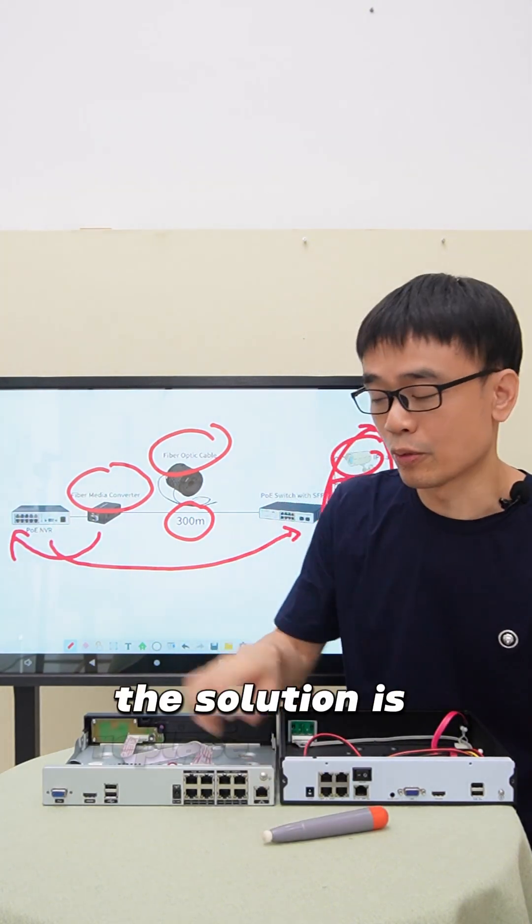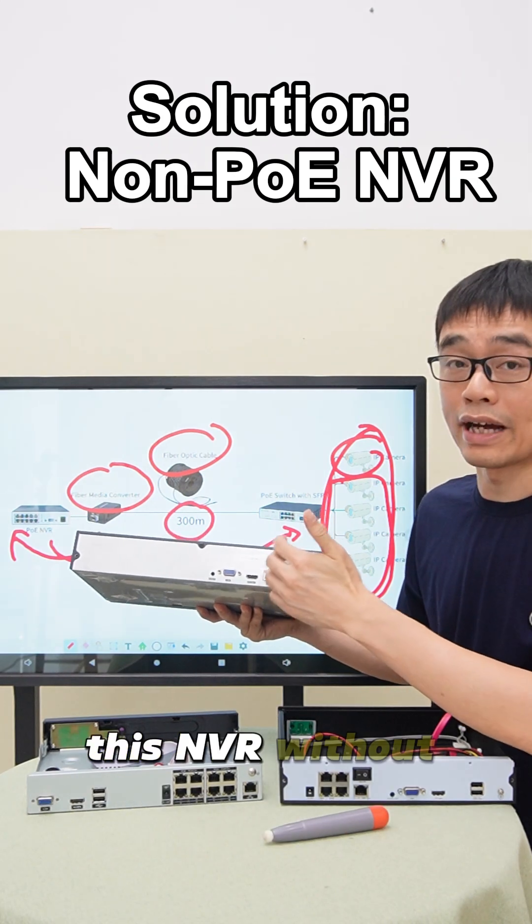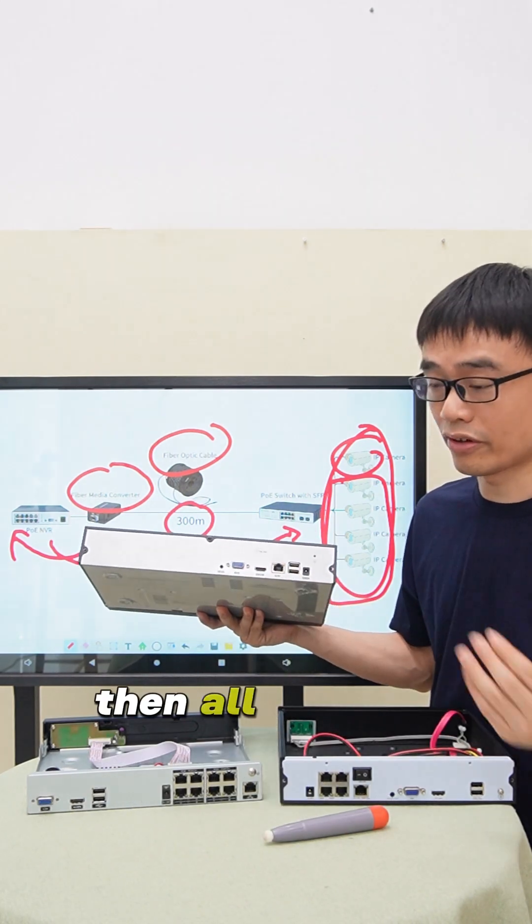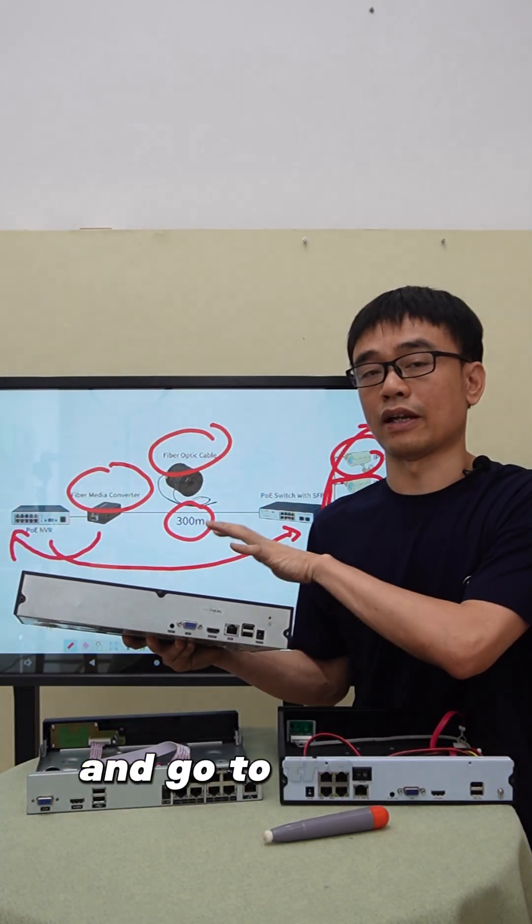The solution is to replace this PoE NVR with an NVR without PoE ports. Then all the PoE cameras can pass through the LAN port and go to the NVR.